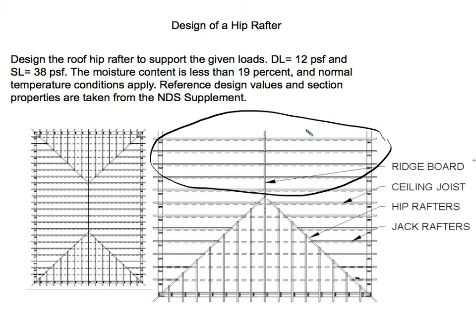The ceiling joists prevent the rafters from displacing left to right on one side and right to left on the other side, so the ceiling joists are doing a lot of work — they're in tension.